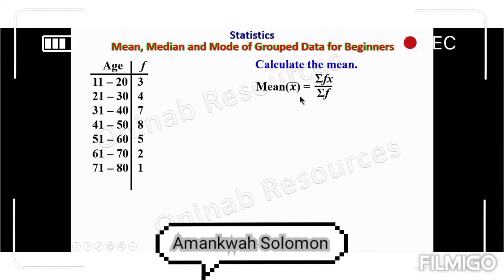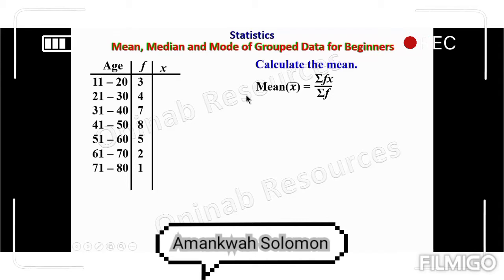In this column we have f. We need two additional columns — the column for x, where x is the midpoint value of each class interval. We create the column for x, which represents the mean value of each of the class intervals.